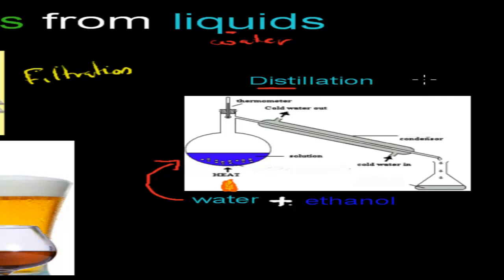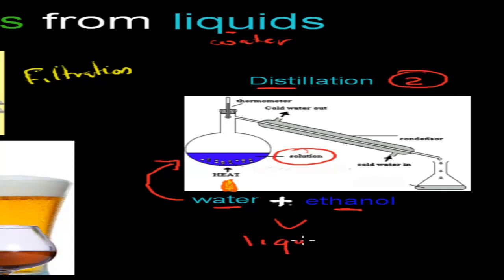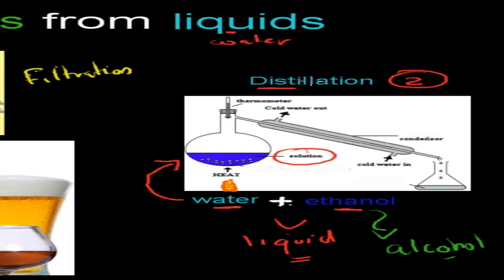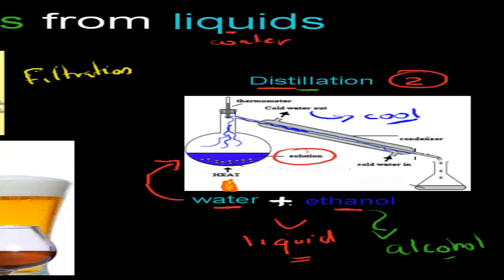Another way is called distillation — this is the second way we can separate soluble substances. For example, this mixture here in purple is a mixture between water and ethanol. Both of these are liquids but they're mixed together. We want to get only ethanol, because ethanol is actually something we use to make alcohol. So we do something called distillation: we start with a mixture of water and ethanol, we heat it up, and some of that ethanol will turn into a gas. It'll go down this tube, which will cool it — cold water runs in and out — and that cooling is called condensation. The gas, which was ethanol, turns back into liquid and we can collect it in a different beaker. So this beaker will be full of ethanol.